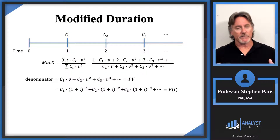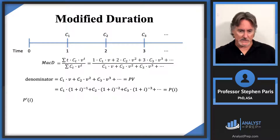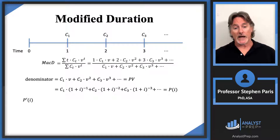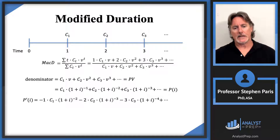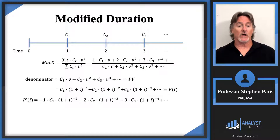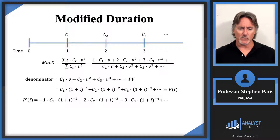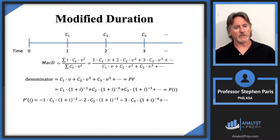Now I want to take the derivative of the present value function — P'(i). It's a straightforward derivative. For instance, the first term brings down a minus 1, giving minus 1 times C_1 times (1+i)^(-2), and so forth. Notice that this derivative is going to be negative: all the C values are positive, (1+i) is positive, but the minus signs from the power rule make the whole expression negative.